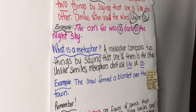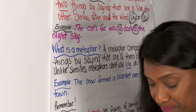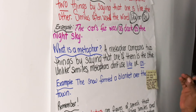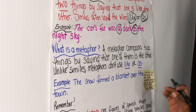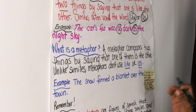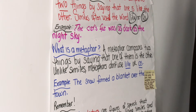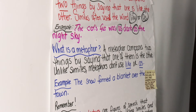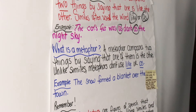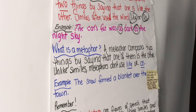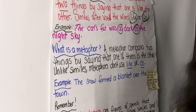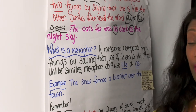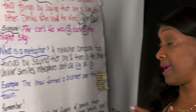Now let's look at a metaphor, boys and girls. A metaphor compares two things by saying that one of them is the other. Unlike similes, metaphors do not use 'like' or 'as.' Similes use the words 'like' or 'as'; metaphors do not use 'like' or 'as' at all.